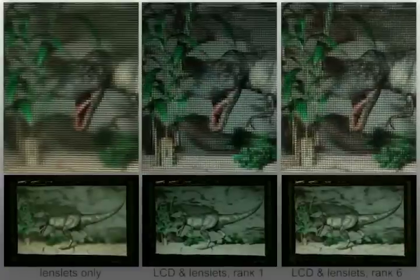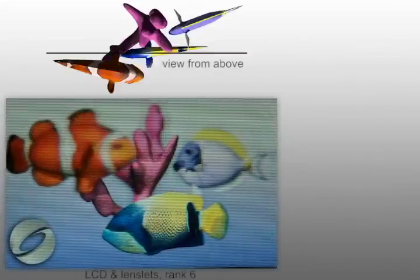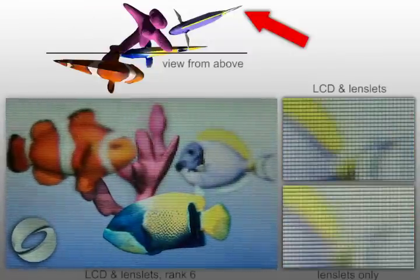Compared to only using the directional backlight, or without any time multiplexing, tensor displays significantly improve image fidelity, even with low-rank light field approximations that can be implemented with today's LCD switching speeds. Spatial image resolution is significantly increased for objects close to the physical display and also for 3D objects floating outside the enclosure.